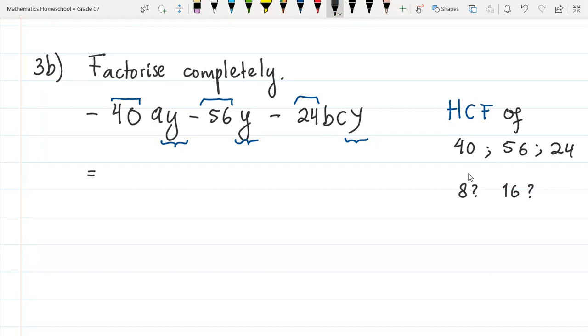So now I know that the common factor will be, the common factor in these questions will be first negative 8, because negative 8 is indeed the common factor of 40, 56, and 24. If it's all negative, then the common factor, the highest common factor will be also negative. And then we have y.